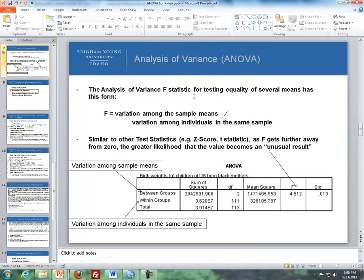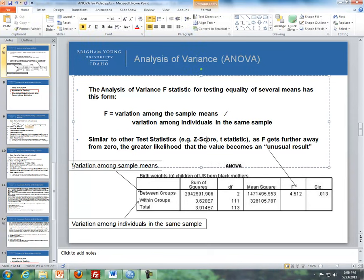Now the Analysis of Variance test, the F statistic. We've had the Z score and the T statistic, which is the one-sample T, paired-sample T test, and independent-sample T test. Now we have a new test statistic, which is the F statistic. The basic formula is the variation among the sample means divided by the variation among the individuals in the same sample. Similar to other test statistics,